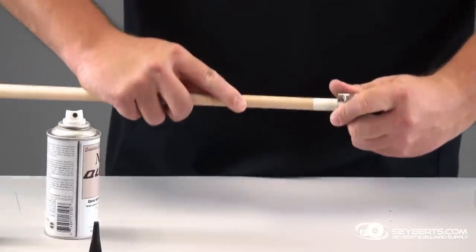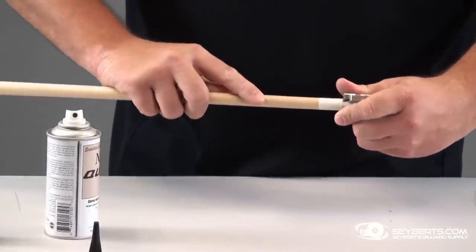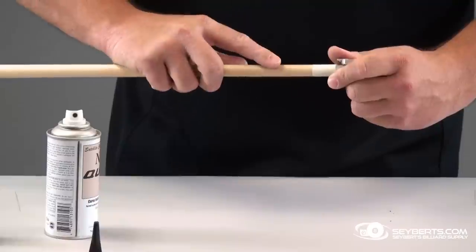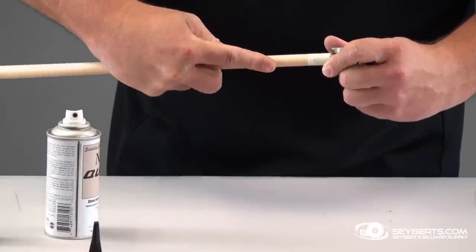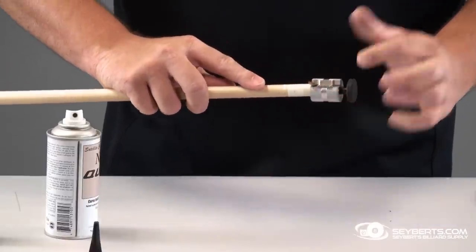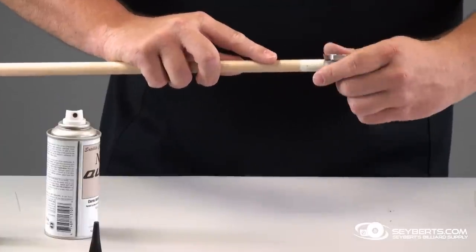Okay, now you want to grab your Cuetec mushroom grazer. Basically, all we're going to do is take the 14-millimeter tip down a little closer to 13 millimeters, and then that's where the Cut-Rite will take over.